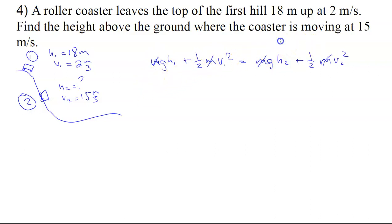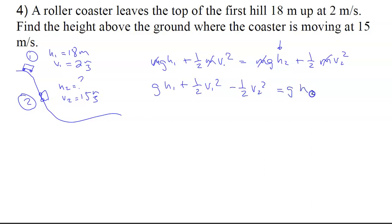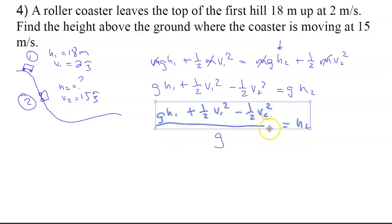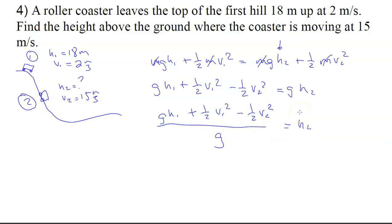We're looking for the height h₂, so subtract the ½v₂² term from both sides and divide by g — we're back on Earth, so g is 9.8. You could multiply through by two to eliminate the one-halves. Plug in all those numbers and see what you get.